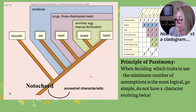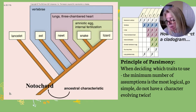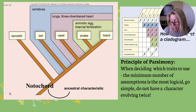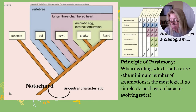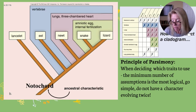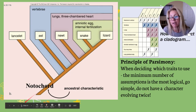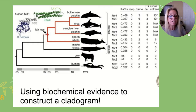For your notes: cladistics is a method that uses shared derived characters to develop a hypothesis of evolutionary history. A cladogram reflects that evolutionary history. The common ancestor and all of its descendant lineages is called a clade. Cladistics uses the principle of parsimony — the minimum number of assumptions is most logical. Do not have a character evolving twice. Your best cladograms have the fewest unexplained differences.